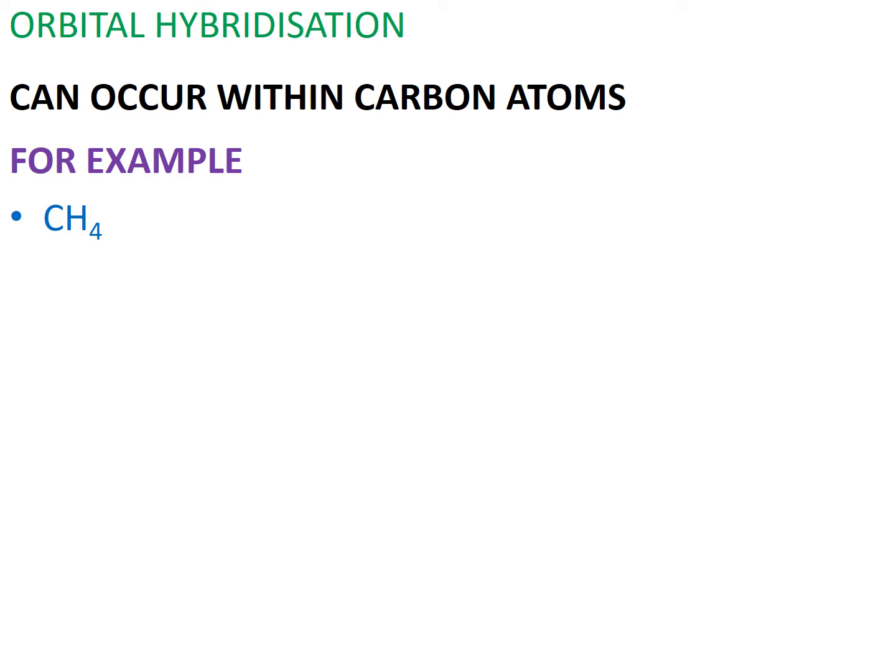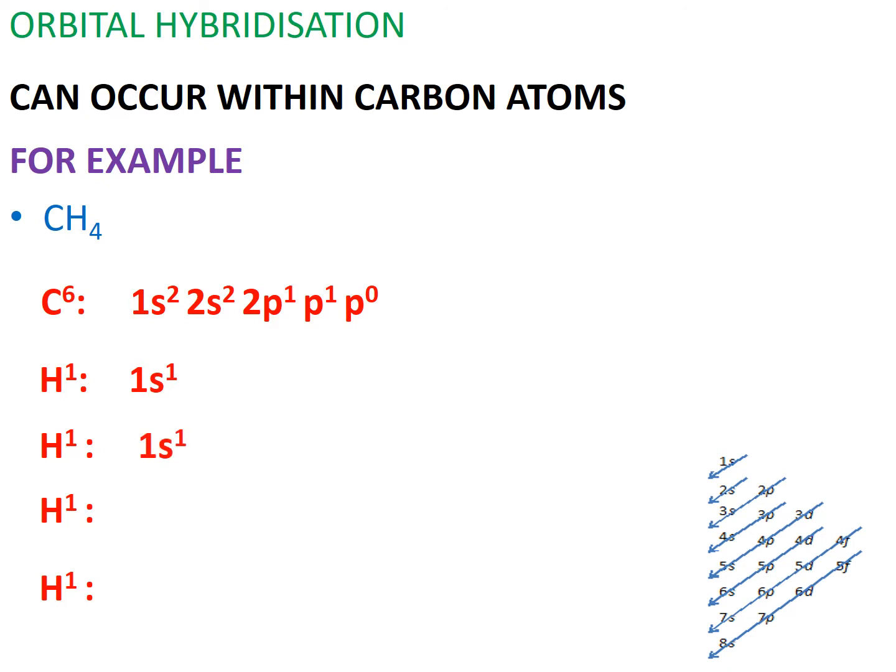When we look at methane's chemical formula, we see that carbon has the lowest number, thus making carbon the central atom in this molecule. When we write out the electron configurations of the atoms bonded together in this molecule, we see that these four hydrogens are available to form four covalent bonds.